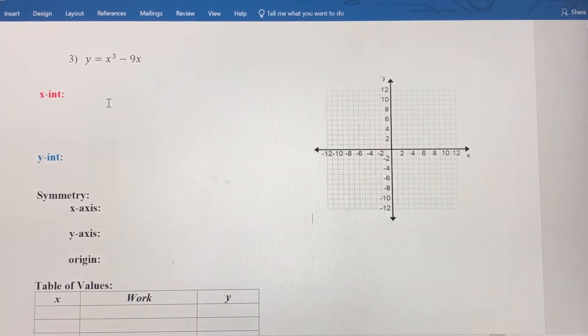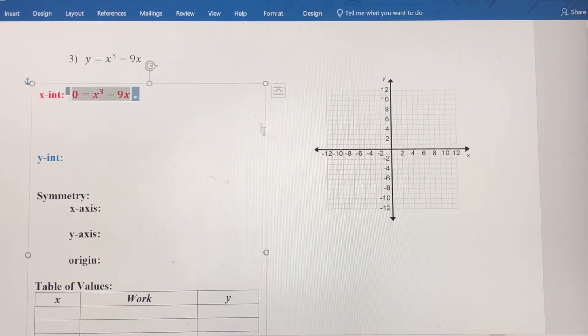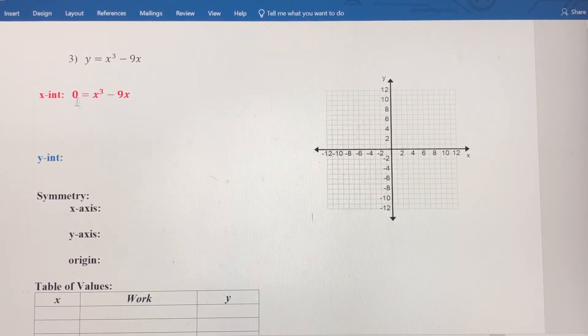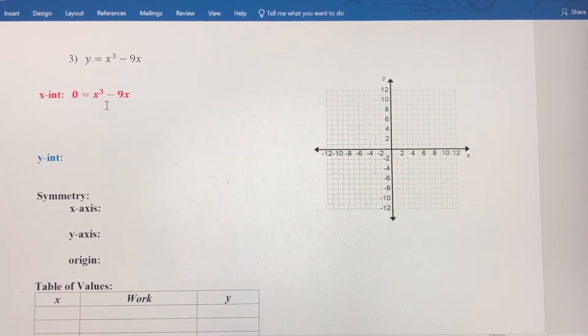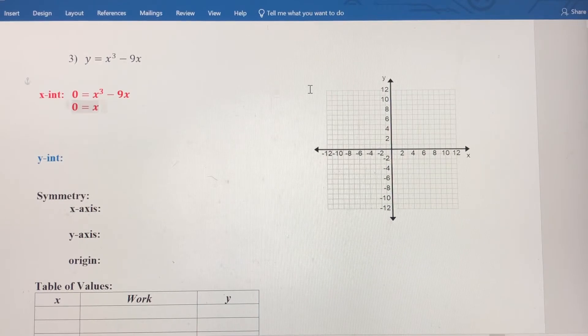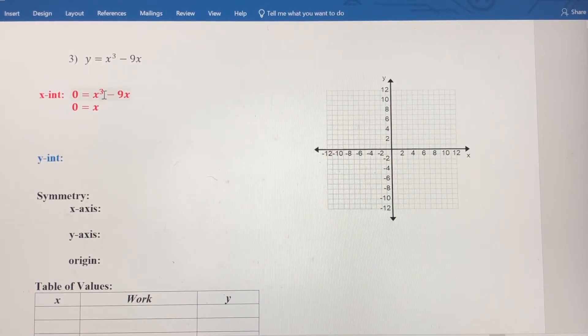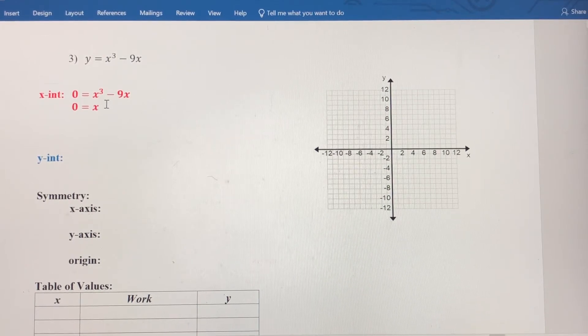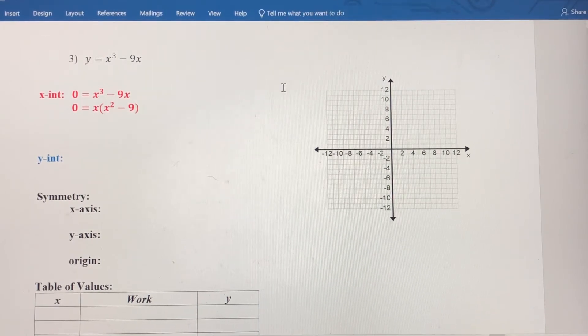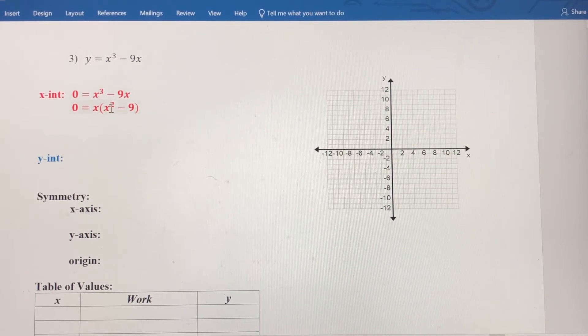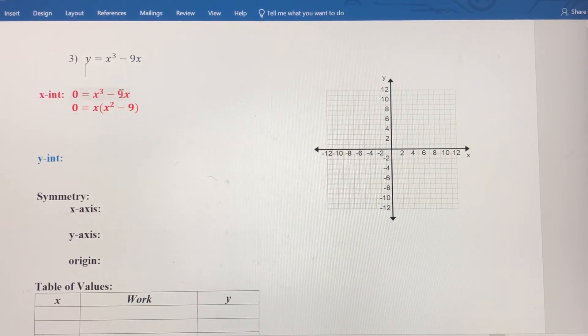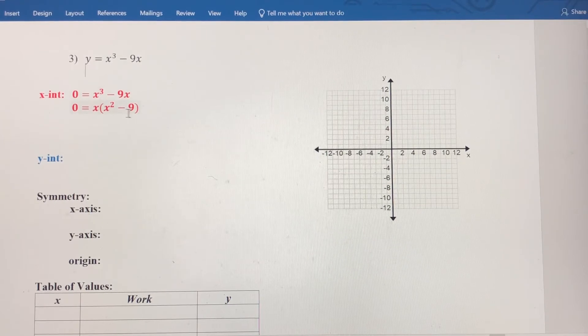So first thing let's do, let's find the x-intercept. Remember, to find the x-intercept we're going to replace y with 0. Now I've got something here, I've got a binomial that can be factored, and it can actually be factored twice. So the first thing I want to do is take out a greatest common factor. I'm going to divide both these by x. I'm going to factor out an x term, and that leaves me a binomial of x squared minus 9. So if you divide x cubed by x you get x squared. If you divide negative 9x by x, you get negative 9.